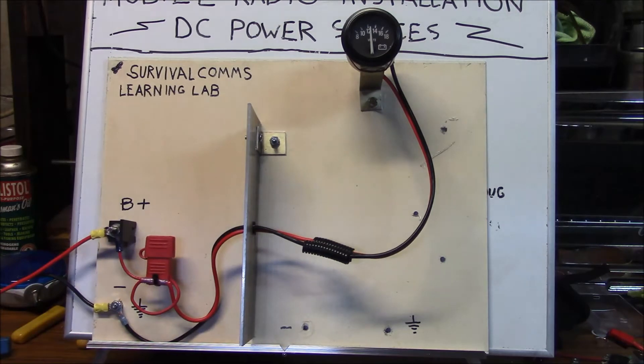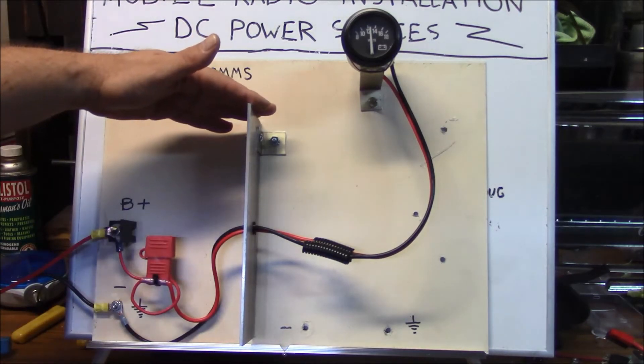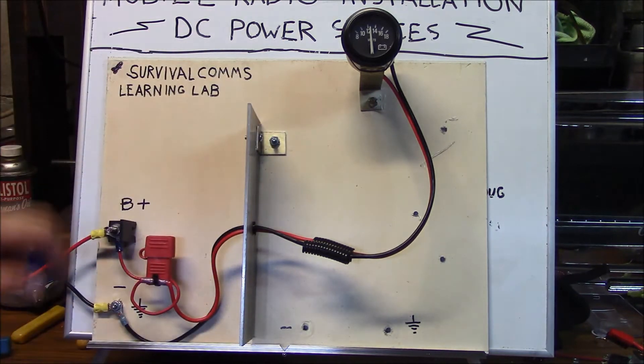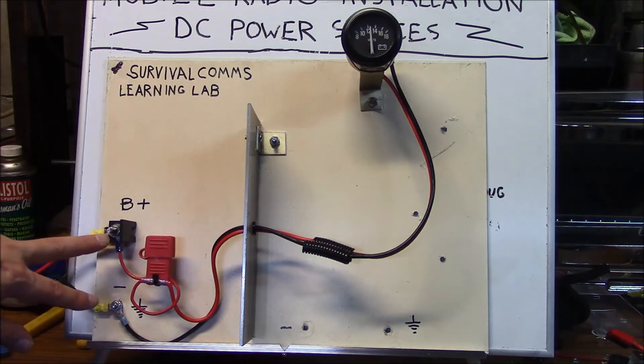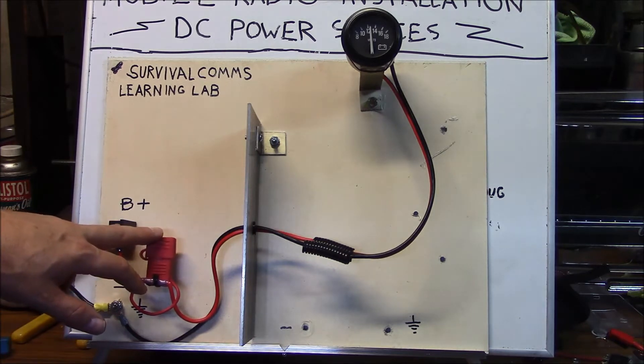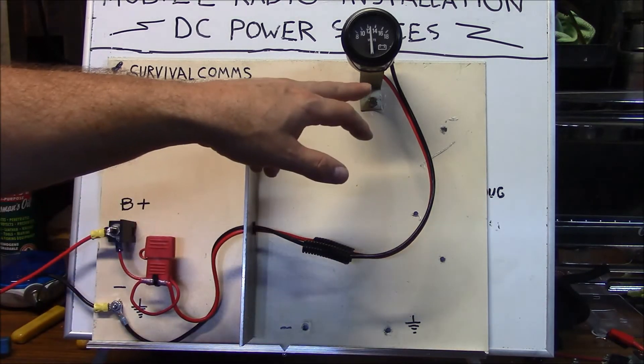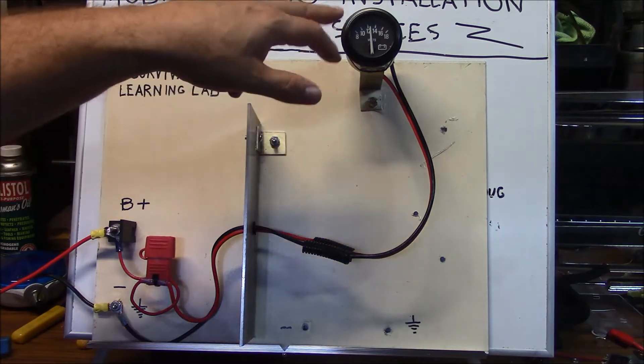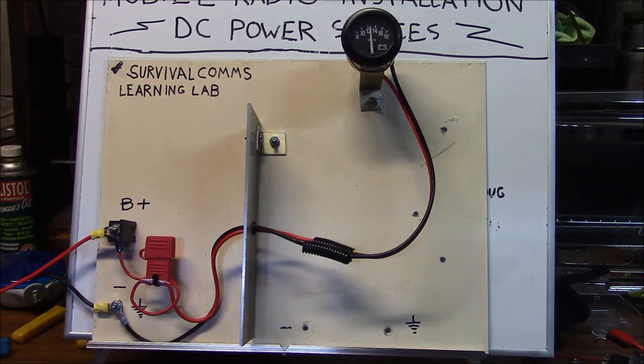This model I've built here represents an automobile. This is your firewall right here and your cables are passing through it. This represents your battery which is your source. Here's a fuse for protection and your battery positive and negative lead to this voltmeter which represents our load.